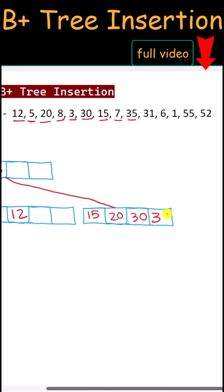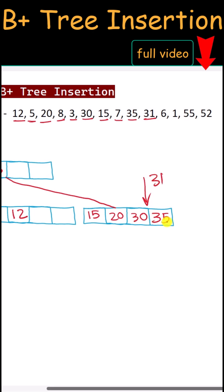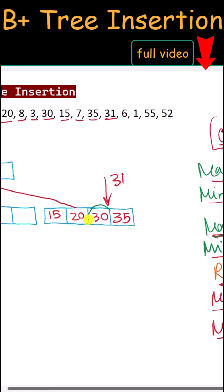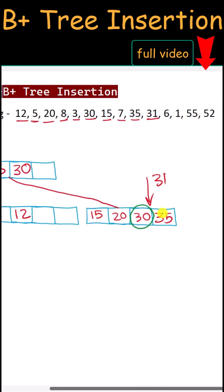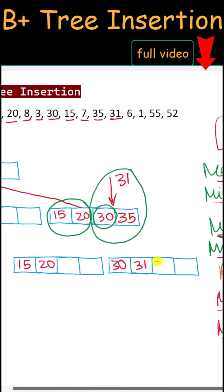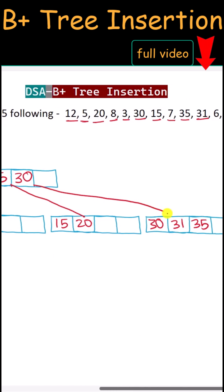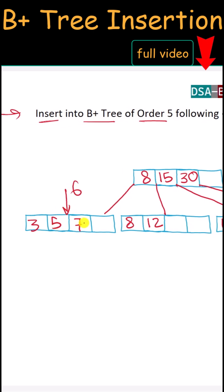Next, 7 is inserted in its correct position. Next, 35 is inserted to the right. Then 31 is inserted between 30 and 35. Now we have to split that node — 30 is the median, so 30 is moved up to the root node. The left pointer of 30 points to the left child and the right pointer points to the right child.